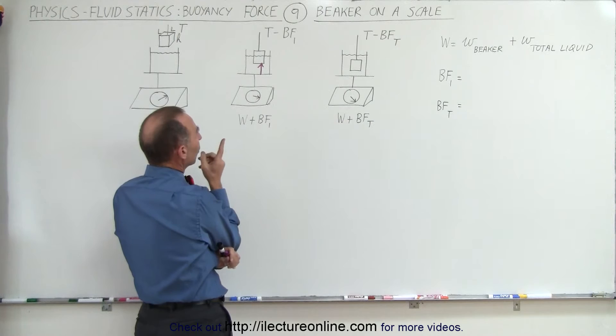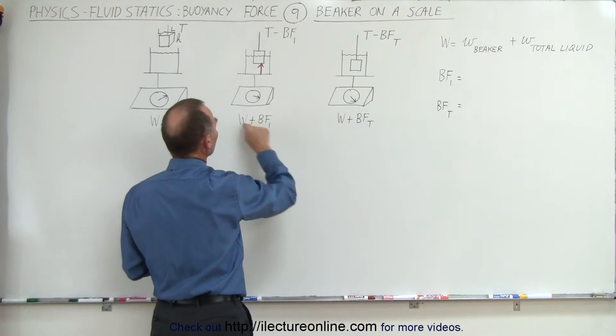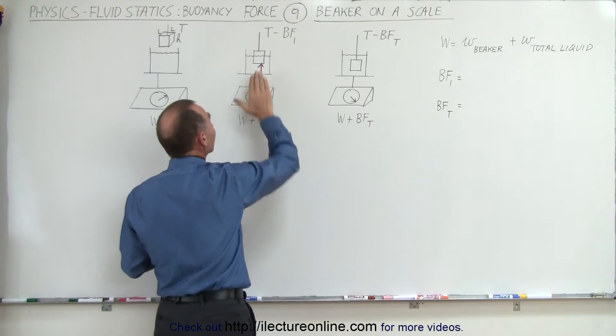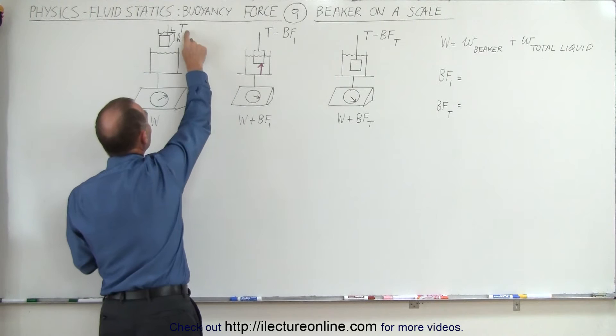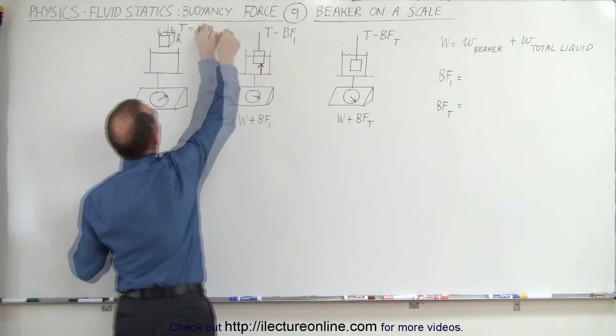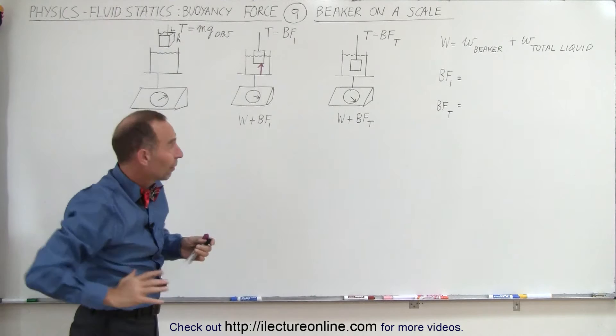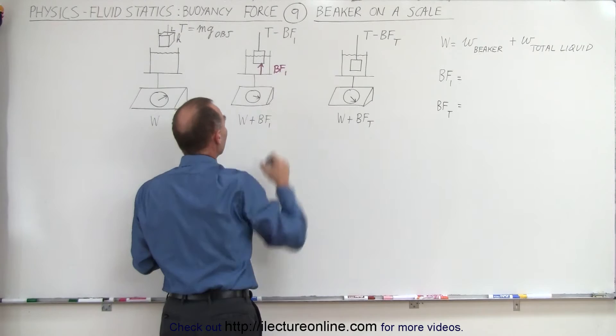What is that buoyancy force equal to, and how does it appear on the scale? That additional buoyancy force — the force pushing back against the object — reduces the tension in the string, which used to be equal to the weight of the object, mg. That tension is now being reduced by the buoyancy force, the amount of force the liquid is pushing back against the object.